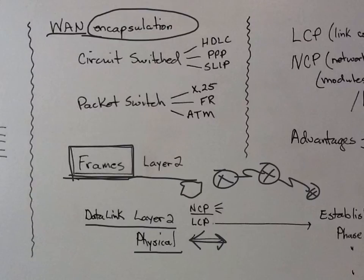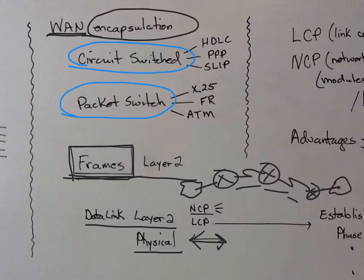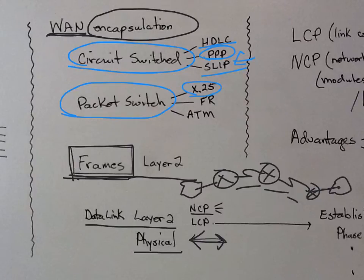Our connection here uses Ethernet in, and then we use all kinds of protocols to get it across and bring it back out. So between each link, we have some type of LAN encapsulation. It could be circuit-switched or packet-switched. HDLC is the typical default. PPP is the one we're working on now. SLIP we will not cover.